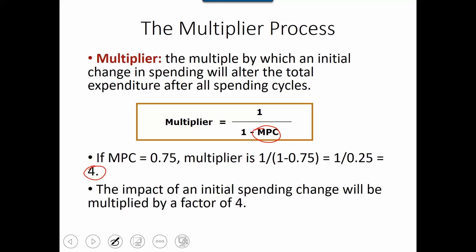So the impact of an initial spending change will be multiplied by a factor of 4. So that is by how much time at the end of the cycle, how much you will lose in terms of GDP.